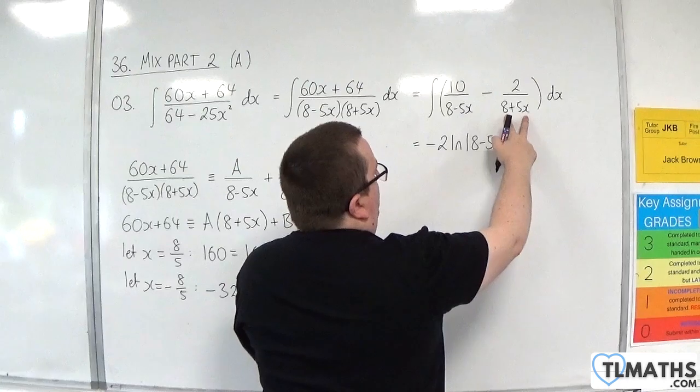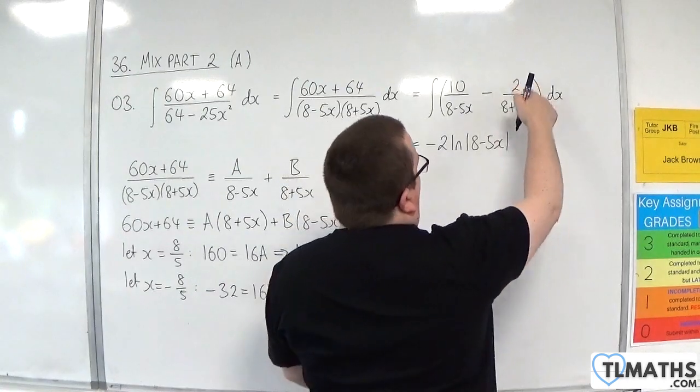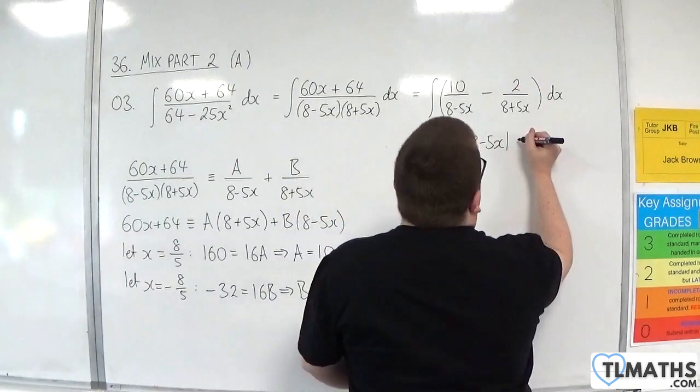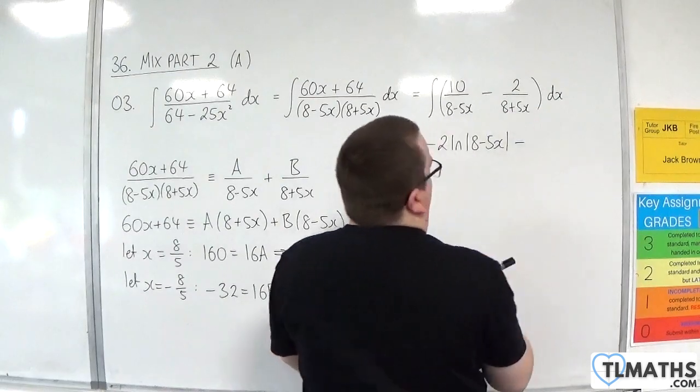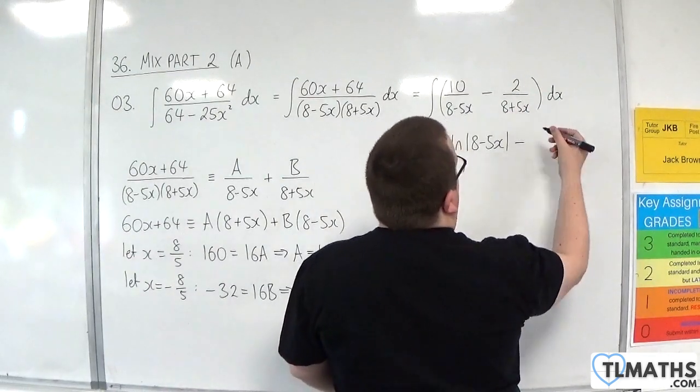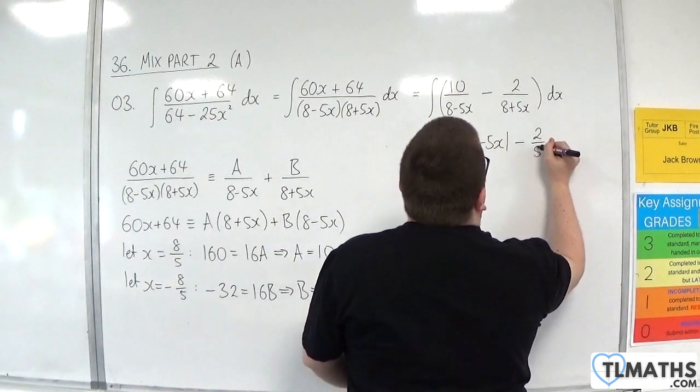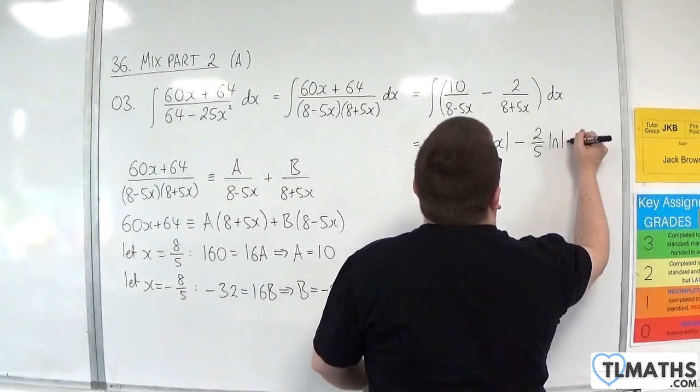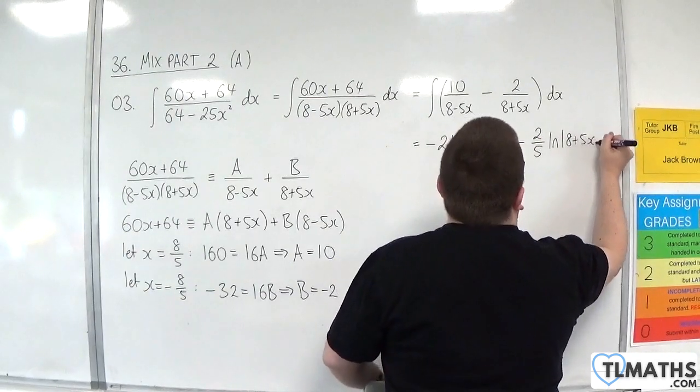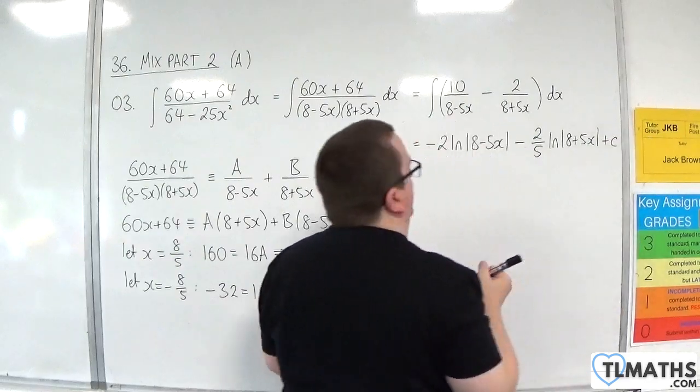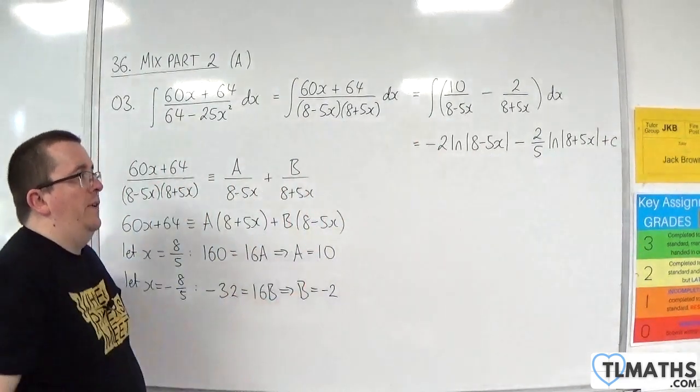Here, the bottom differentiates to 5, and we've got 2 in the numerator. So because we've got a subtract there, we'll have subtract here. So we've actually got 2 fifths of what we need. So 2 fifths times the natural log of 8 plus 5x plus a constant c. And I would leave it like that.